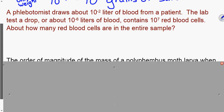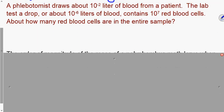A phlebotomist. This is a person that draws blood. That's literally their living. They go around and draw blood from people for blood tests or donate blood or whatever. But that is a career. So a phlebotomist draws about 10 to the negative 2 liter of blood from a patient. So they take a sample, and the sample size is 10 to the negative 2. The lab tests a drop, or about 10 to the negative 6 liters of blood, and that contains 10 to the negative 7th red blood cells. About how many red blood cells are in the entire sample? Well, we know how many red blood cells are in a drop. There's 10 to the 7th per drop. That is what it's saying.